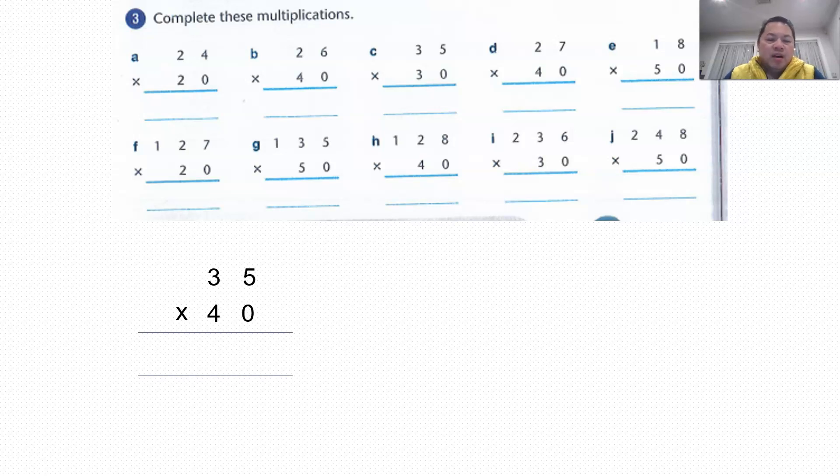So again, when you times by 10, first, the 0 is just because it's a multiple of 10. And then 4 times 5 is 20. 3 times 4 is 12. 12 plus 2 is 14. It's straightforward, isn't it? Another example here.